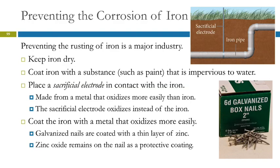The other thing you can do is coat the iron with a metal that oxidizes more easily — essentially putting the sacrificial electrode all around the outside of your object. That's what's done with galvanized nails. You can buy regular shiny nails or galvanized ones coated with zinc on the outside. The zinc gets oxidized more easily than the iron, so it corrodes, but it makes zinc oxide which is stable. That zinc oxide then acts as a nice protective coating for the nails.